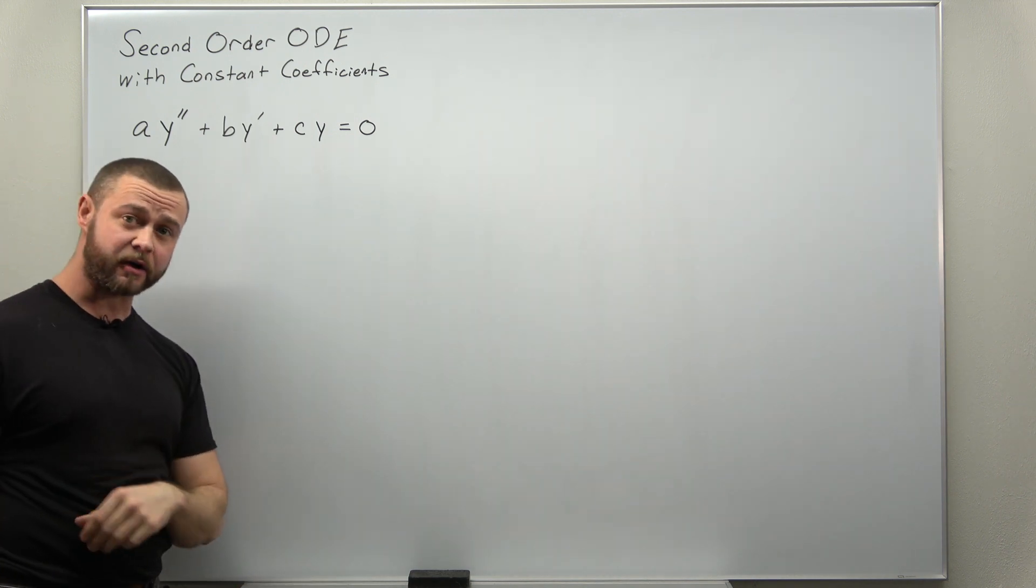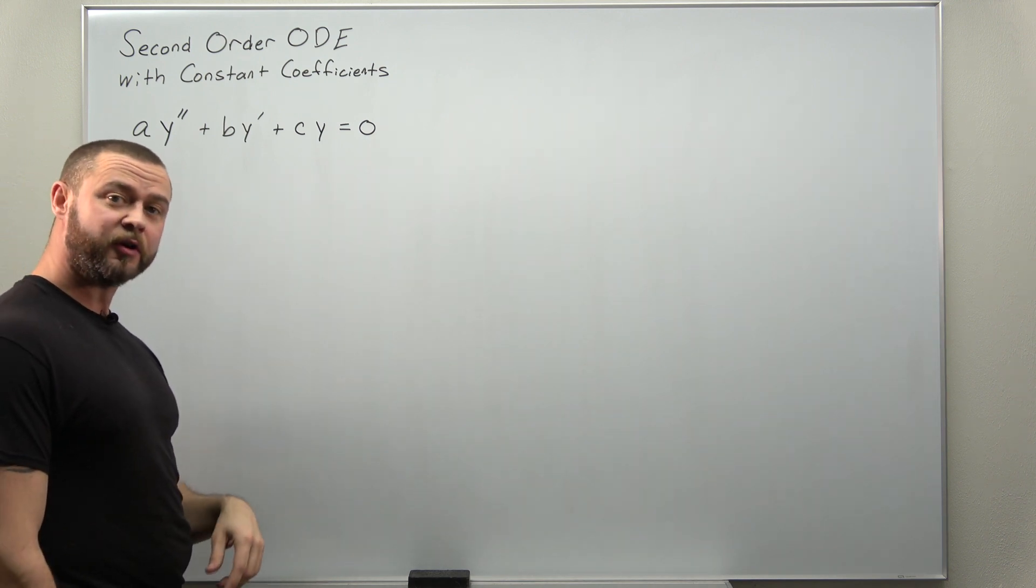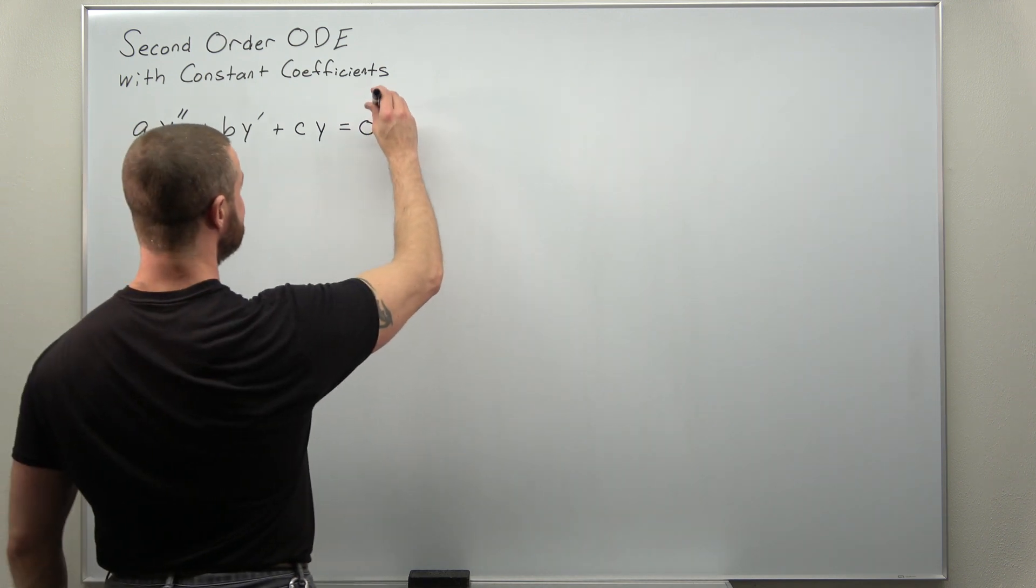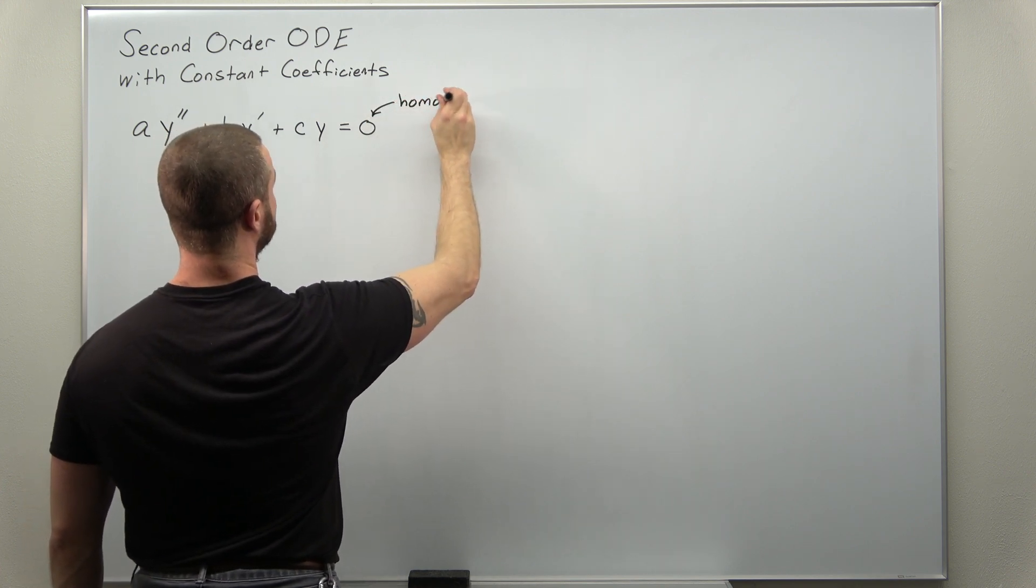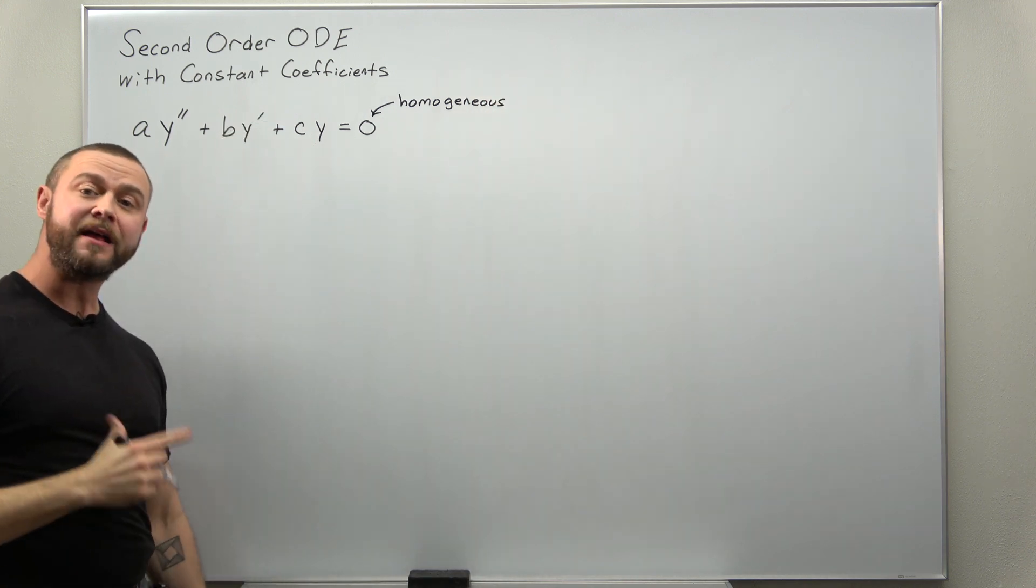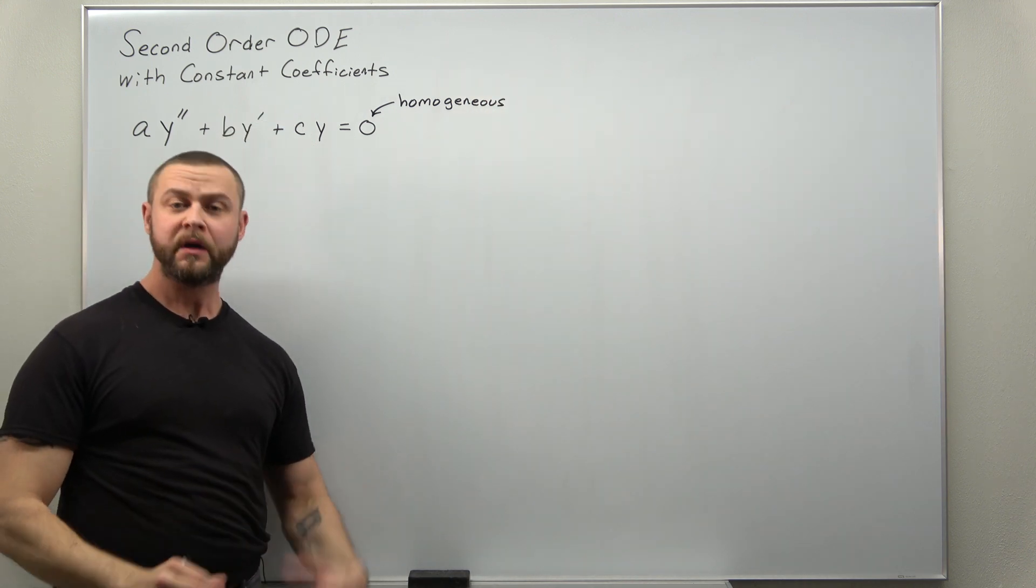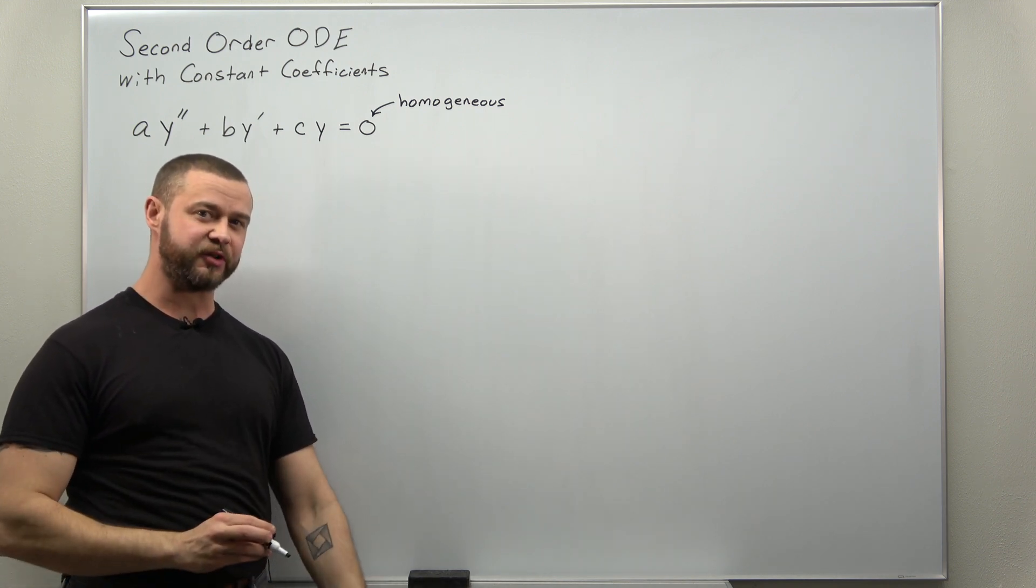So A, B, and C here are constants, they're our coefficients, and the other name for this type of ODE is, since the right-hand side is zero, this is sometimes called a homogeneous ODE. A little bit later we'll have videos for how to solve non-homogeneous ODEs.